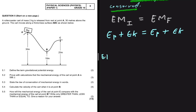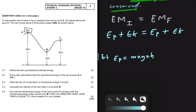Let's look at 5.1: Define the term gravitational potential energy. The formula is the mass multiplied by the gravitational acceleration multiplied by the height. But what does the definition actually say? It is the energy of an object as a result of its position above the surface of the earth.